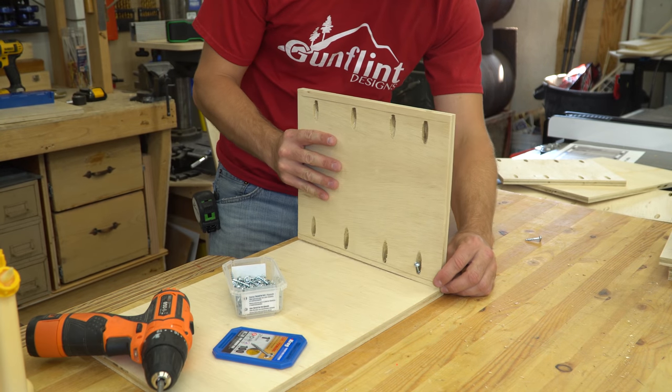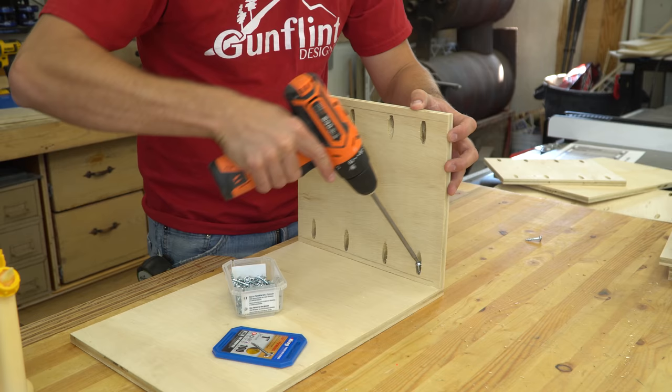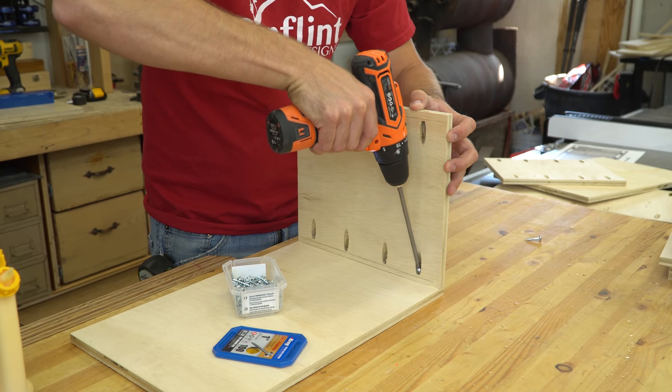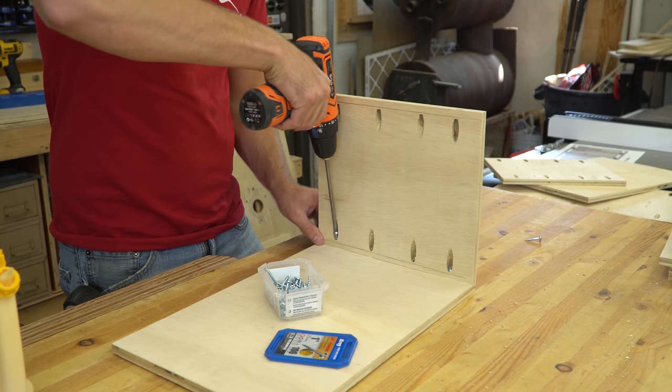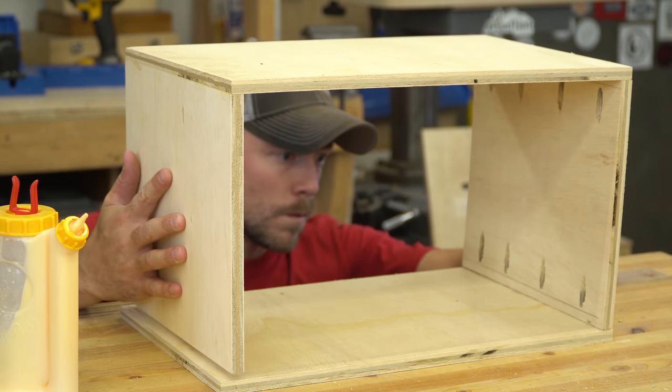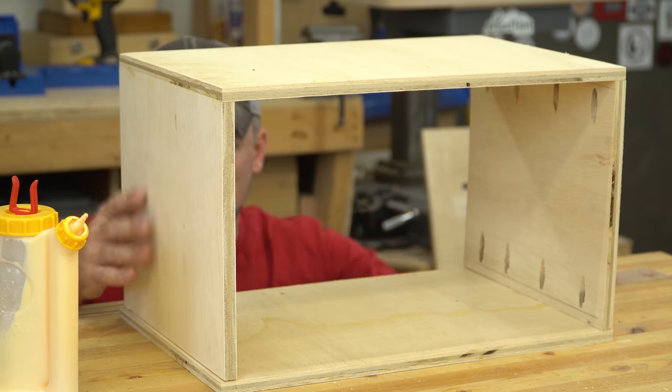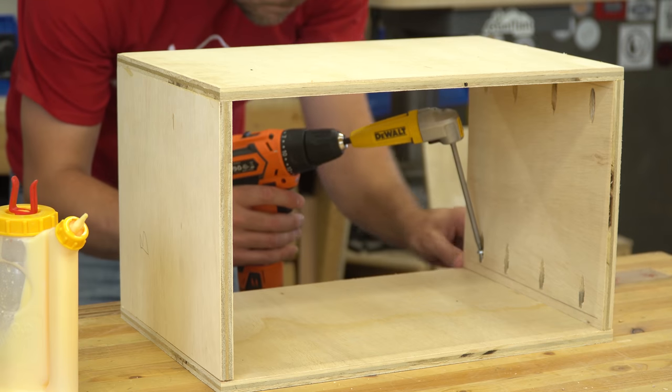Assembly started with the main body of the cabinet, which, let's be honest, it's just a box. I first attached the side walls to the base using glue and screws, making sure that the holes were facing the inside. Once I flipped the box over and added the top, the space got a little confined and I had to use an adapter on my drill to drive the screws in.